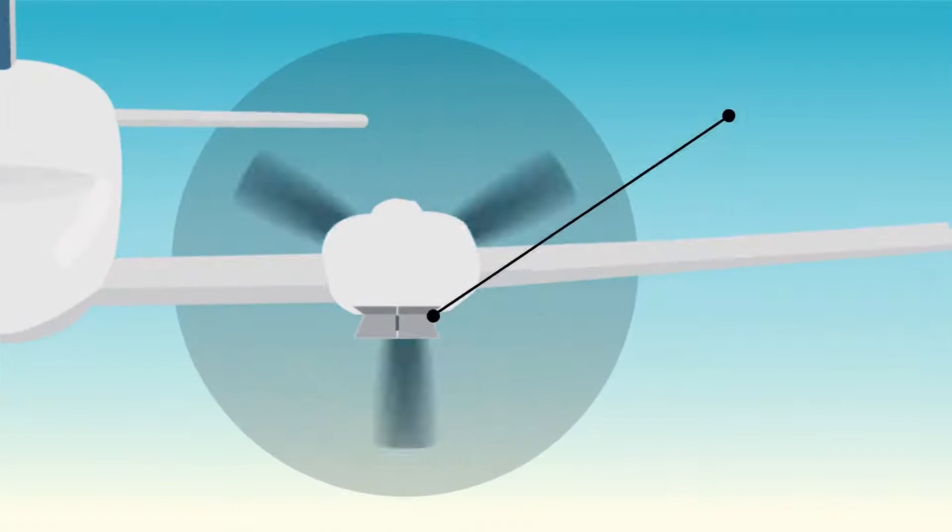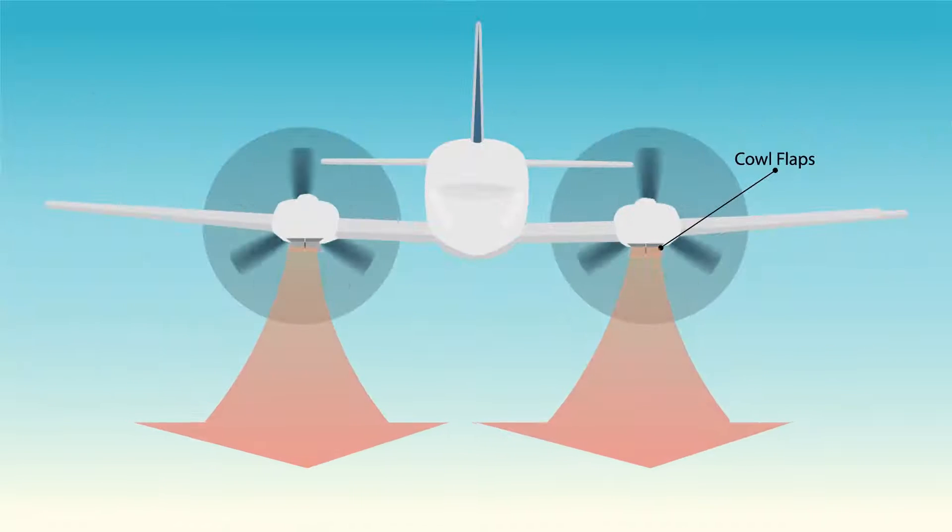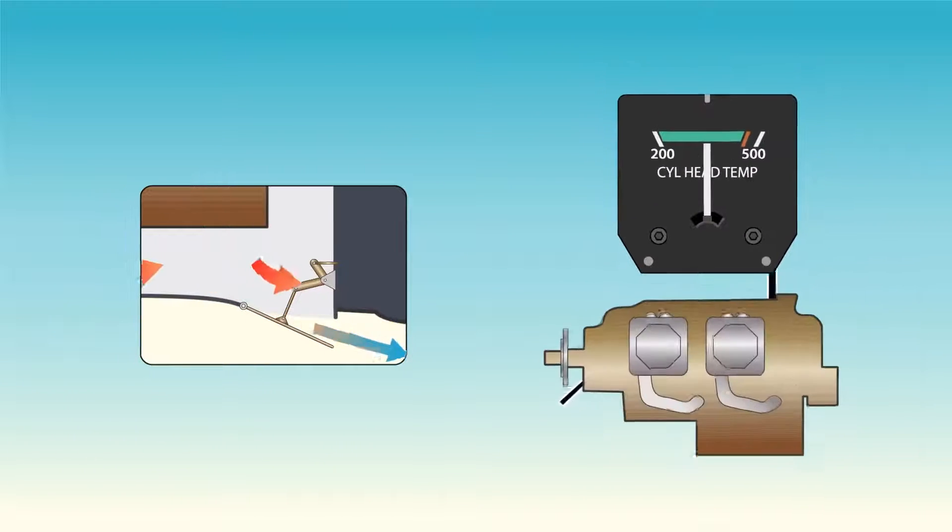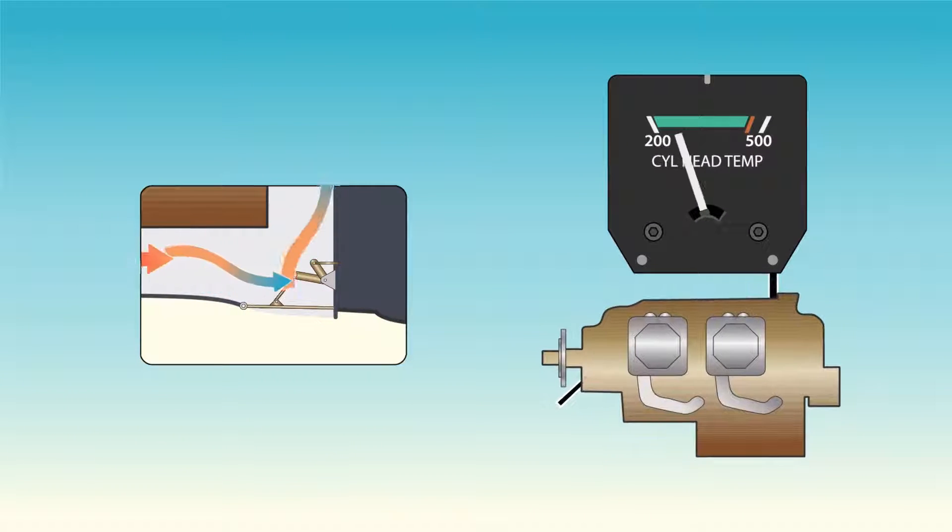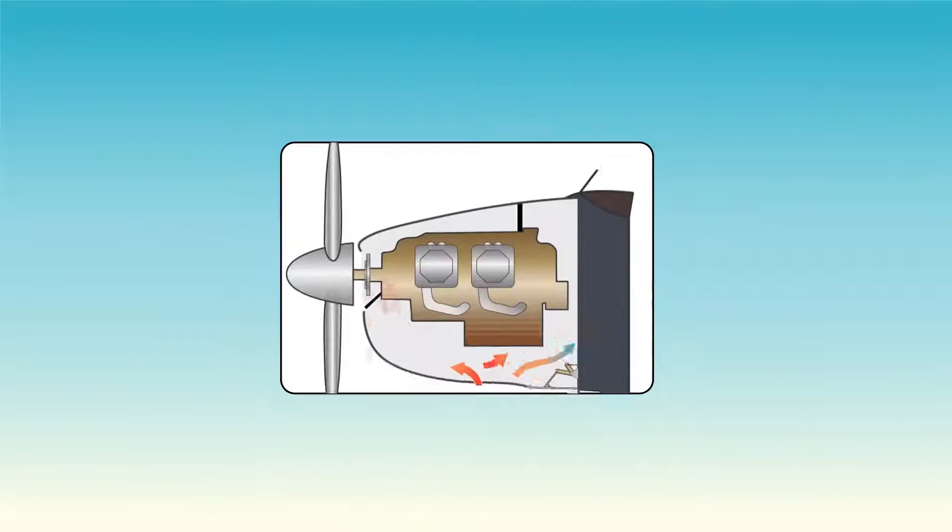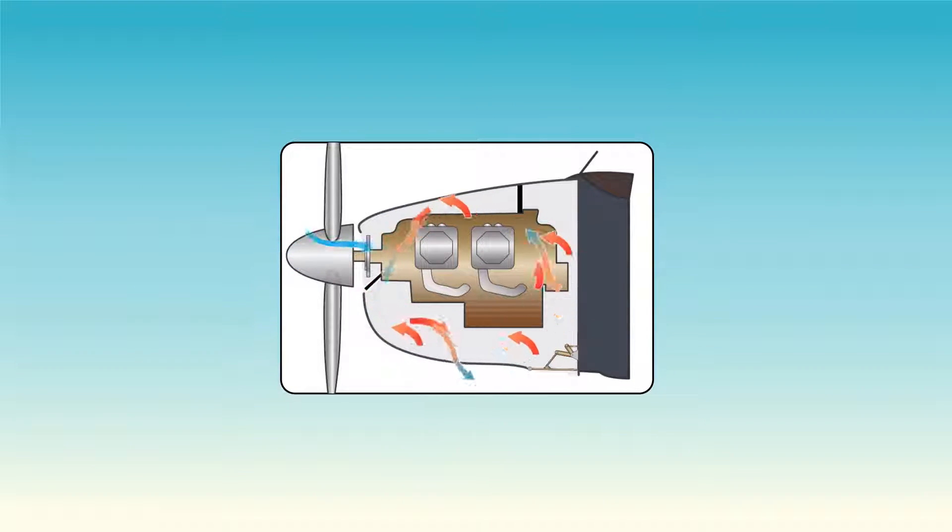Cowl flaps are hinged covers that fit over the opening through which the hot air is expelled. If the engine temperature is low, the cowl flaps can be closed, thereby restricting the flow of expelled hot air and increasing engine temperature.